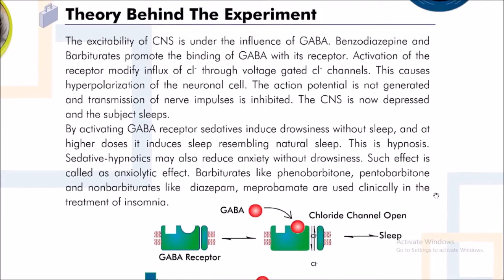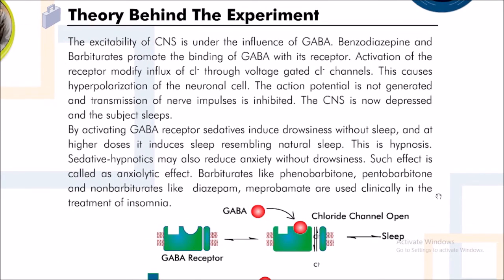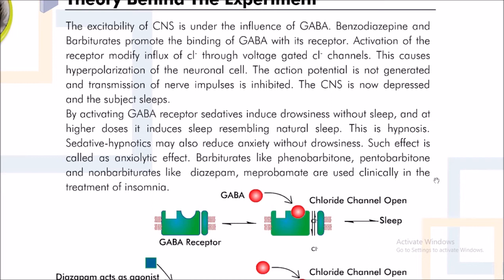The excitability of CNS is under the influence of GABA. Benzodiazepine and barbiturates promote the binding of GABA with its receptor. Activation of the receptor modifies influx of chloride through voltage-gated chloride channels, causing hyperpolarization of the neuronal cell.